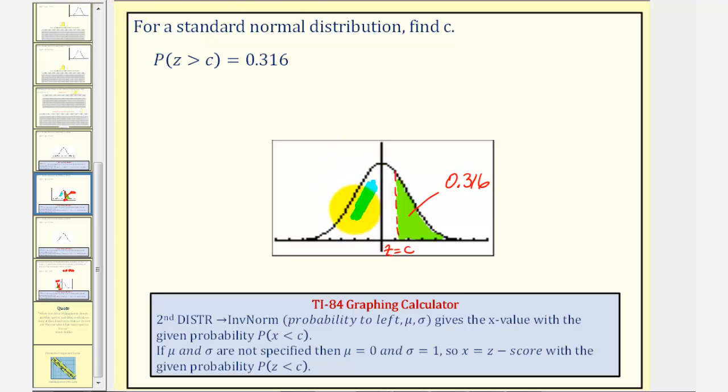and we know the area under the standard normal distribution is equal to one, then the area to the left, this area here, would have to be one minus 0.316, or one minus area to the right, which gives us 0.684 for the area to the left, or the probability to the left, of this given Z-score.